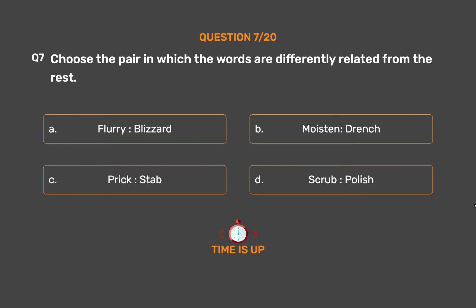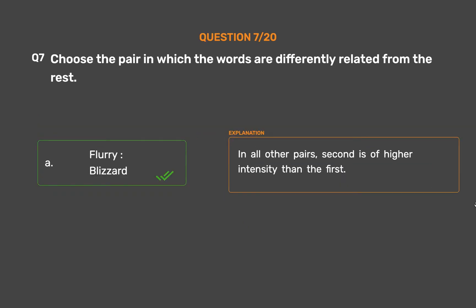The correct answer is Option A: Flurry, Blizzard. In all other pairs, the second is of higher intensity than the first.